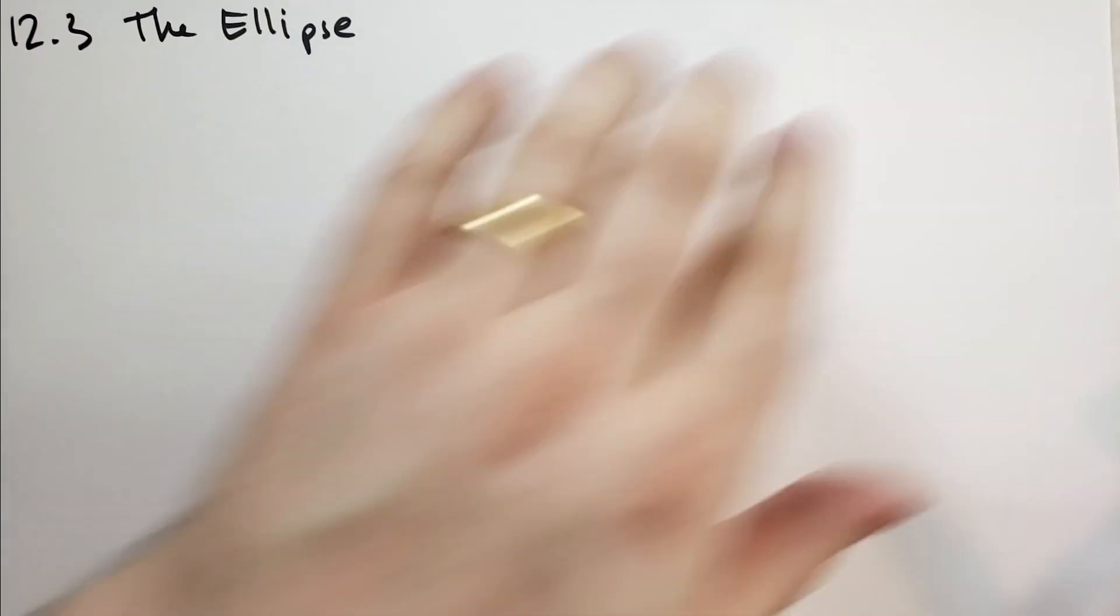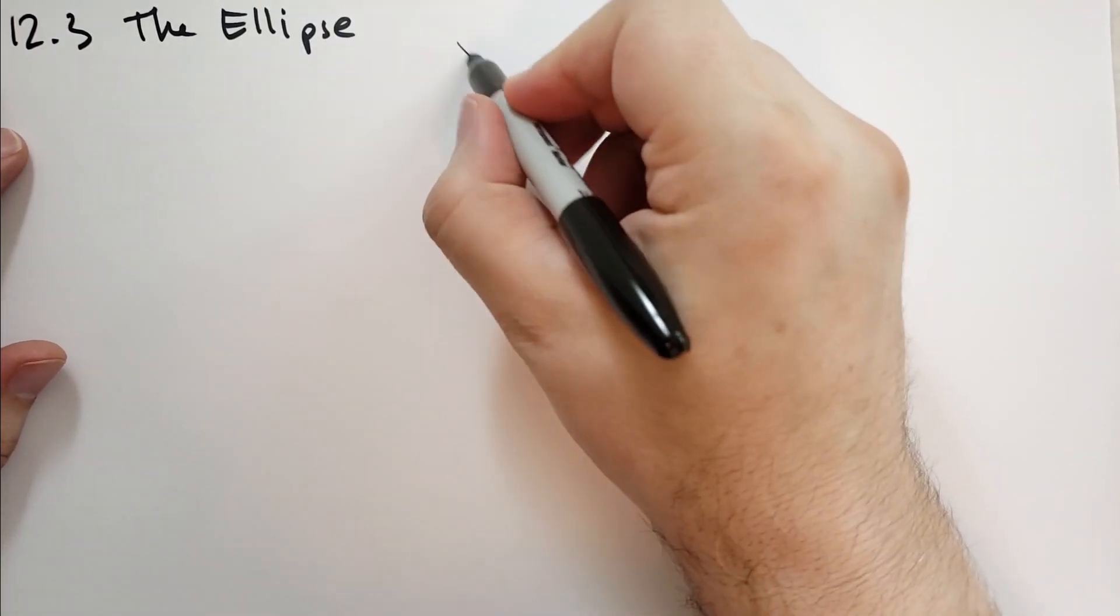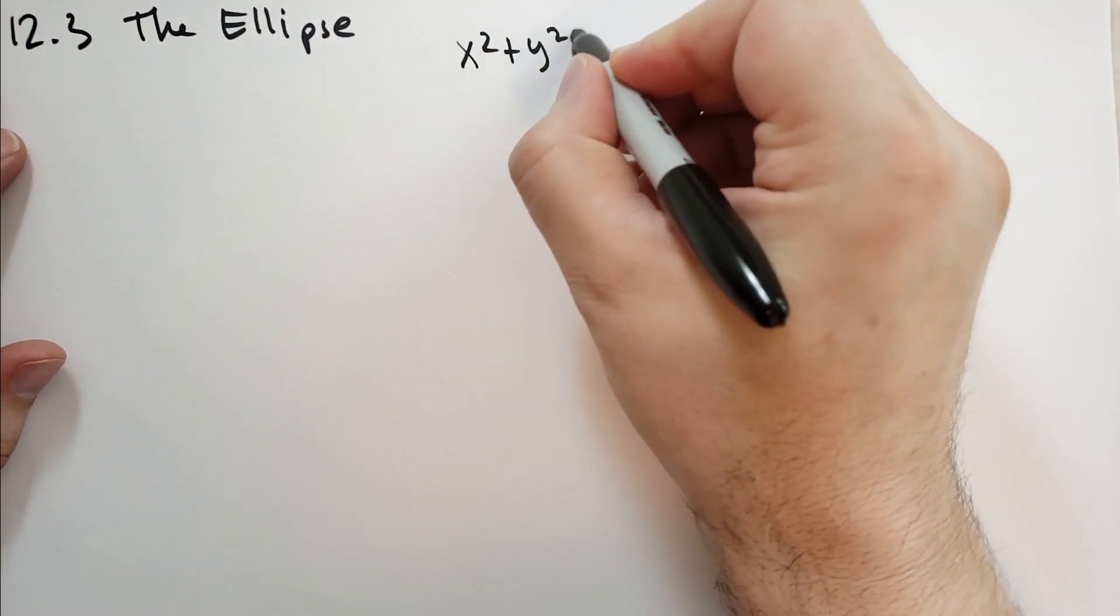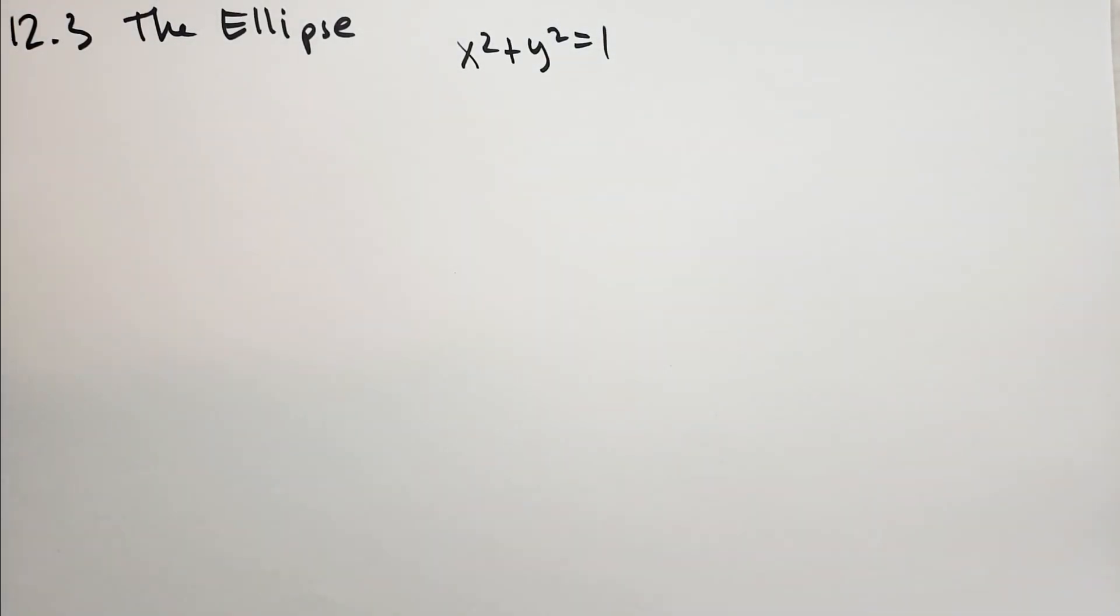And we are going to cheat through the ellipse just like we cheated through the parabola. We are going to note that we have the circle x squared plus y squared equals 1, and so solutions x, y have to satisfy that equation.